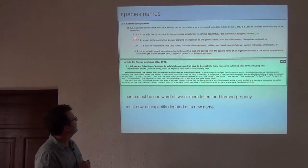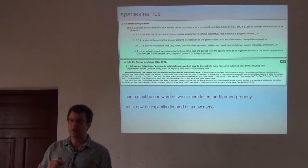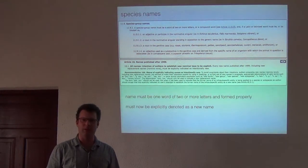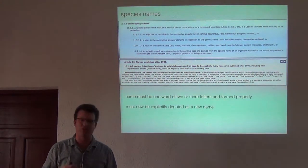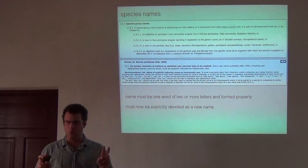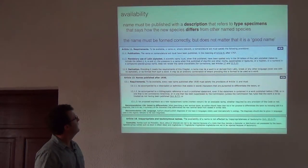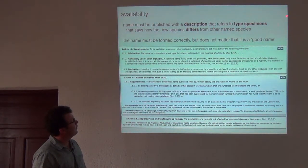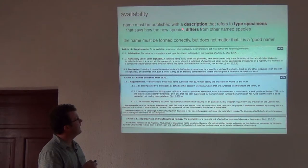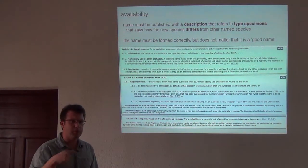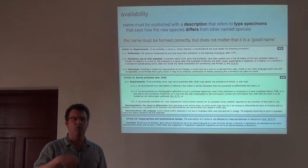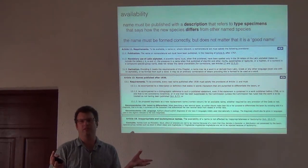These are pieces of the code referring to species group names. There has to be one word of at least two letters, and it has to be formed properly — this afternoon we'll be talking about an exercise on how to make proper names. It also has to be explicitly denoted as a new name. In order for the name to be available, it has to be published with a description that refers to type specimens, and that description has to say it's different from some other named species.